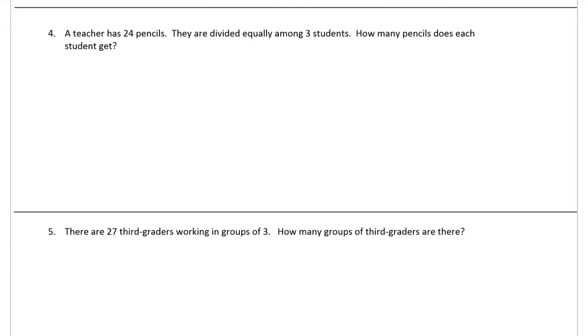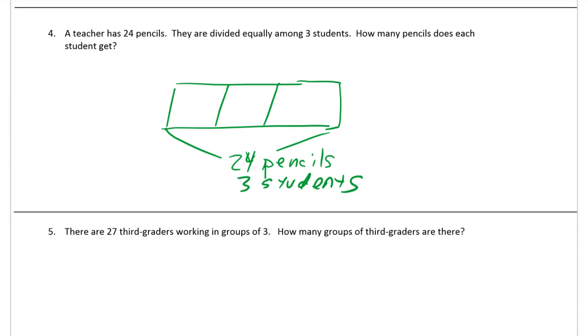A teacher has 24 pencils. They're divided equally among 3 students. How many pencils does each student get? Each box is going to be a student. We know there's 24 pencils, and we know there are 3 students. But what we don't know is how many pencils does a student get.